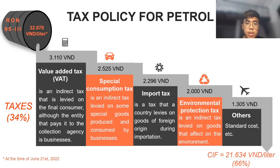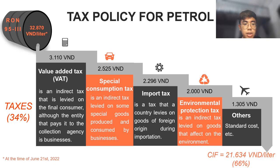I will talk about the tax policy for petrol in Vietnam. Tax on petrol is a long-term policy of the government to ensure revenue for the state. As you can see, at the time of June 21, 2022, the price for 1 liter of RON 95 is nearly 33,000 VND. We can see the four main taxes and some other costs.